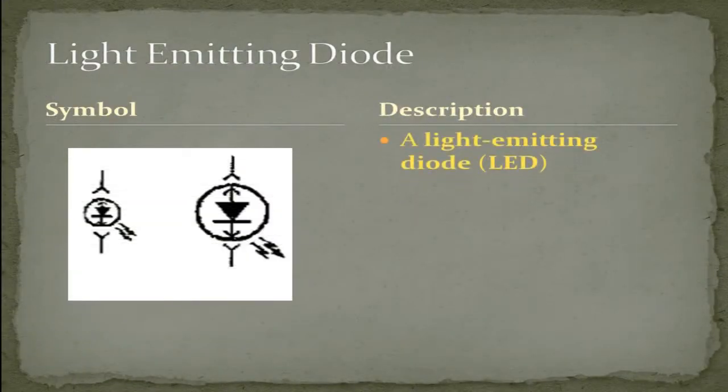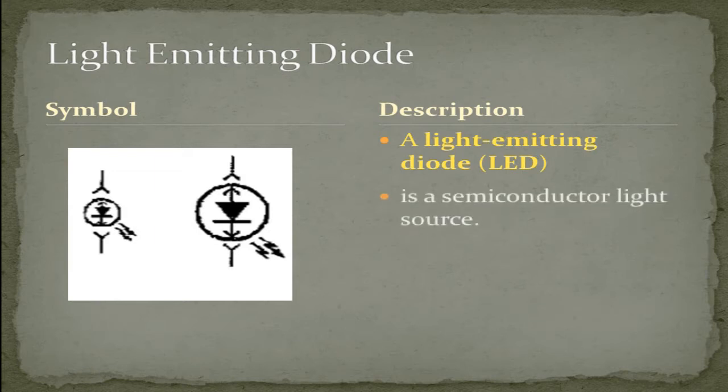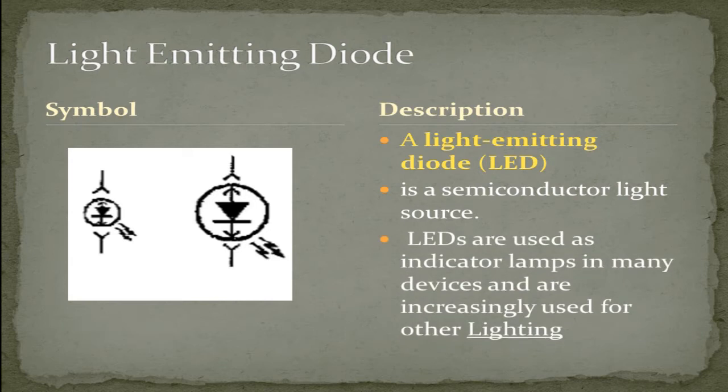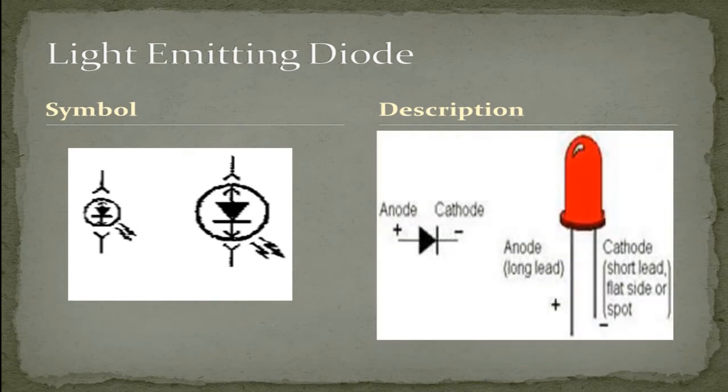A light emitting diode (LED) is a semiconductor light source. LEDs are used as indicator lamps in many devices and are increasingly used for other lighting. As you can see, it's in the same family and actually is a diode that emits light. And the current flows in the direction of the arrow from positive to negative.